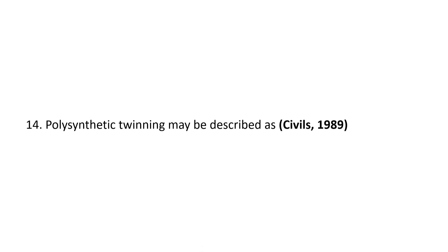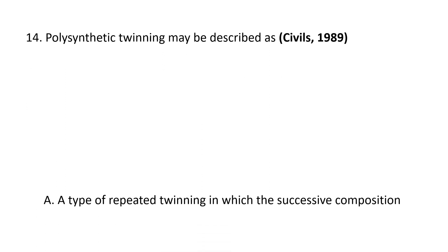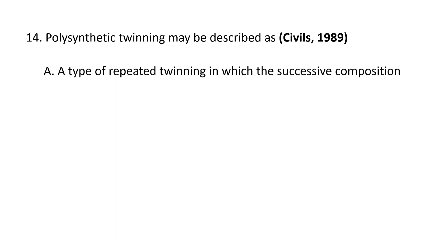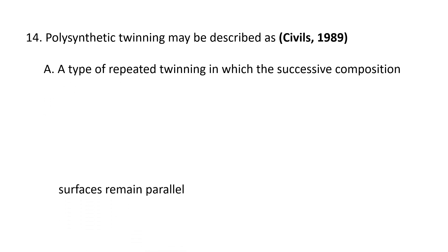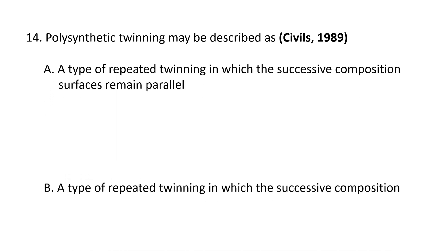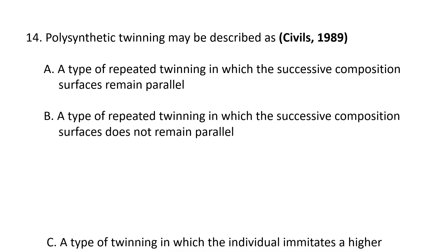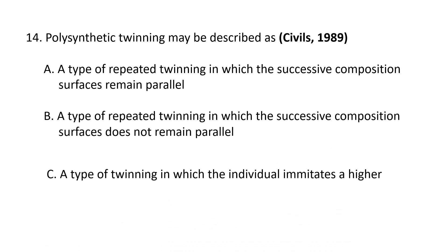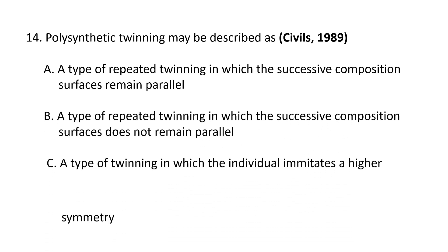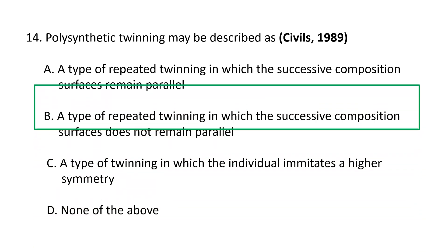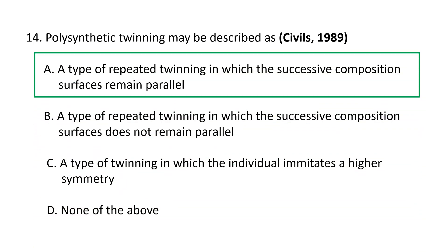Next question. Polysynthetic twinning may be described as: A. A type of repeated twinning in which the successive composition surfaces remain parallel, B. A type of repeated twinning in which the successive composition surfaces do not remain parallel, and C. A type of twinning in which the individuals imitate exhibit a higher symmetry, and D. None of the above. So correct answer is polysynthetic twinning is a type of repeated twinning in which the successive composition surfaces remain parallel.